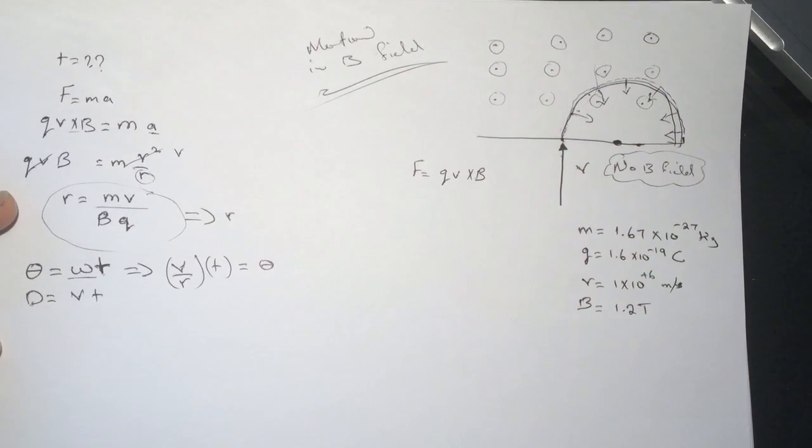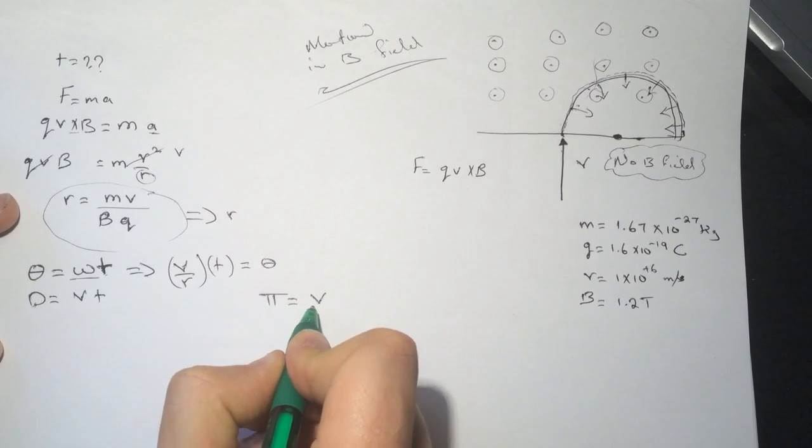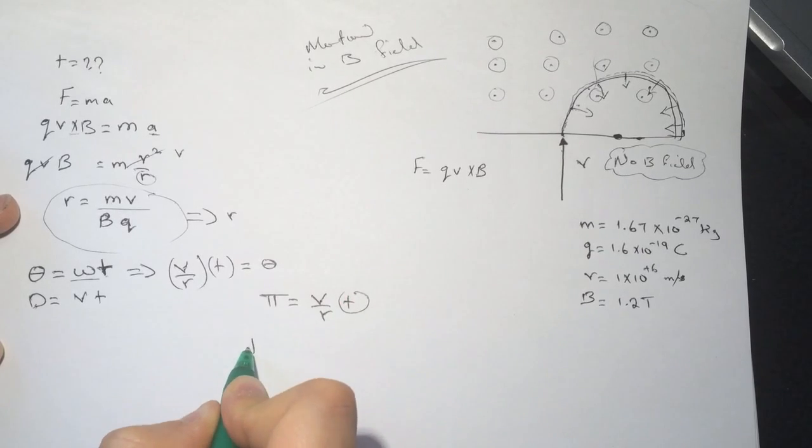So pi will be equal to V over R times T, and we need to find the T, so T will be equal to pi times R over V.